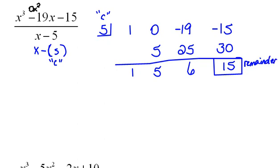So since we started here with an x³ polynomial, we're going to always end up with 1 less power. So our final answer here looks like x² and then a positive 5x and then a positive 6.